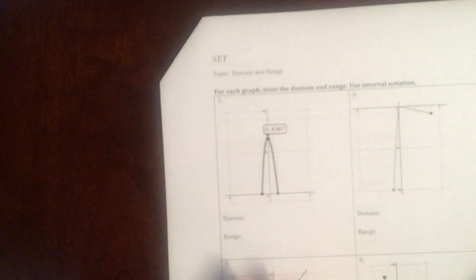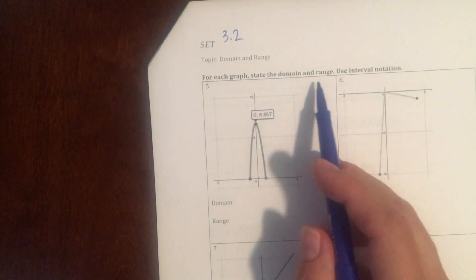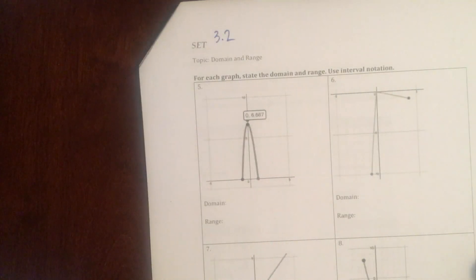This is set part 4, this is 3.2. We're finding the domain and range. So for each graph, state the domain and range and use interval notation.